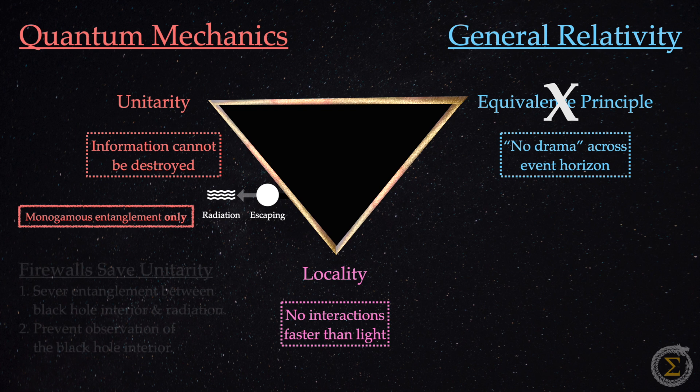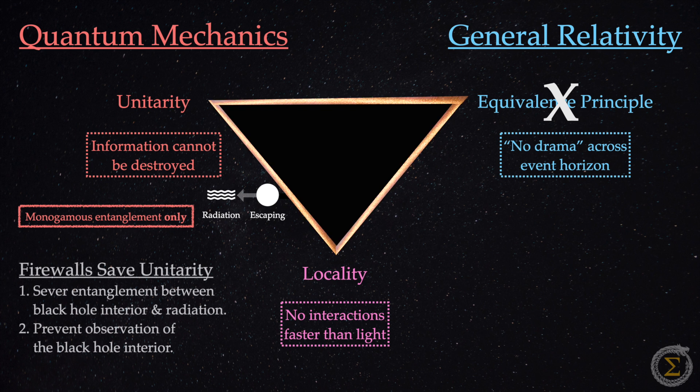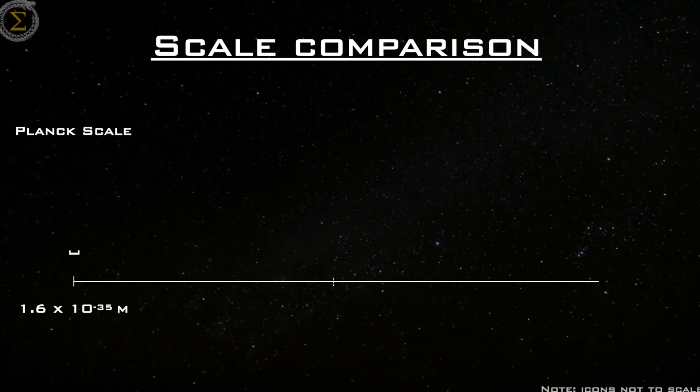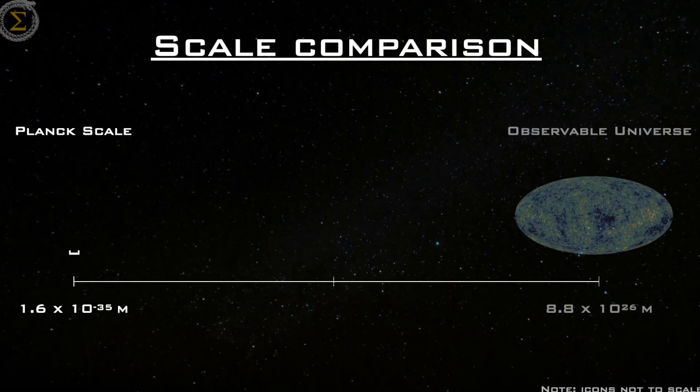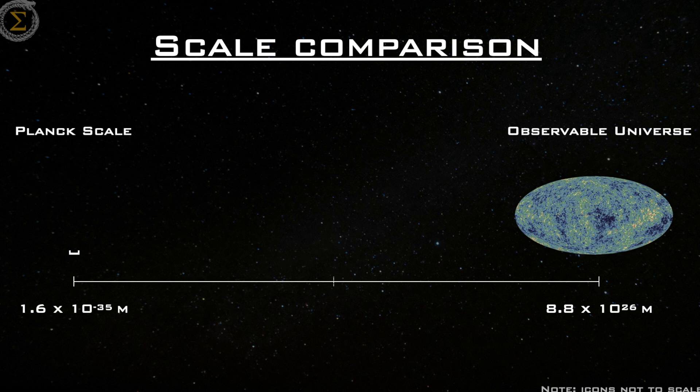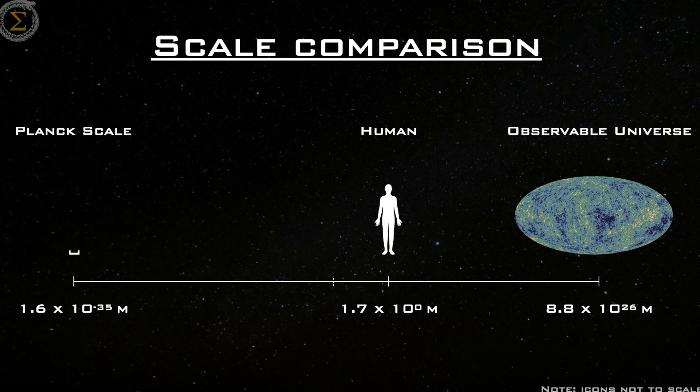One, they sever entanglement between the black hole interior and Hawking radiation, and two, they prevent any observation of the black hole interior. You're probably wondering if we see any evidence of firewalls. Unfortunately, they're not visible to distant observers because this all occurs at the smallest span of our universe, the Planck length. The intense gravitational redshift would render the escaping radiation as negligible Hawking radiation.